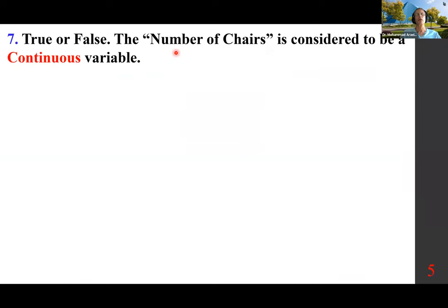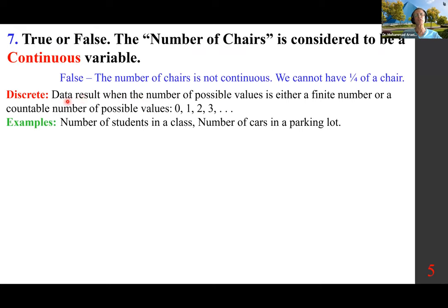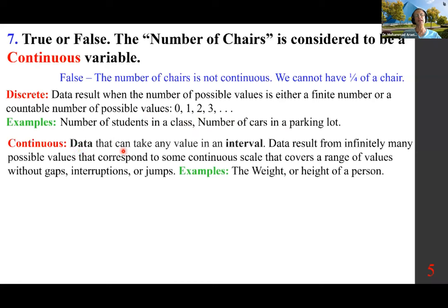True or False: the number of chairs is considered a continuous variable. That is a false statement — the number of chairs is not continuous; we cannot have one-fourth of a chair. Discrete data result when the number of possible values is a finite or countable number, such as 0, 1, 2, 3. Examples: number of students in a class, number of cars in a parking lot. Continuous data can take any value in an interval, resulting from infinitely many possible values along a continuous scale — for example, the weight or height of a person.